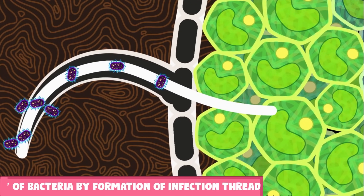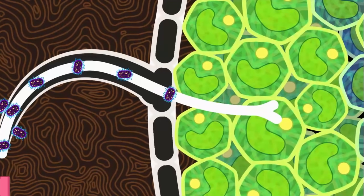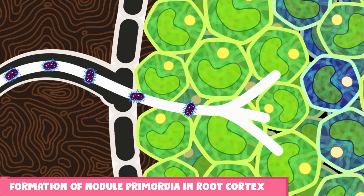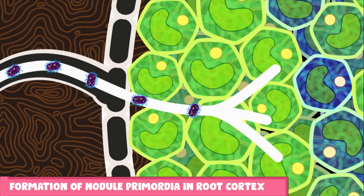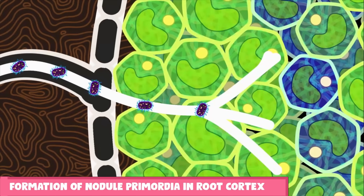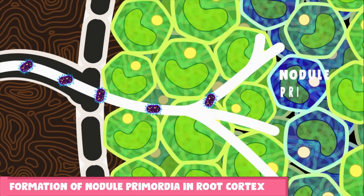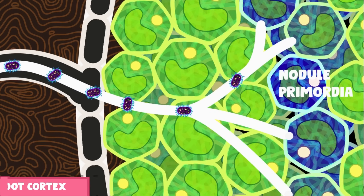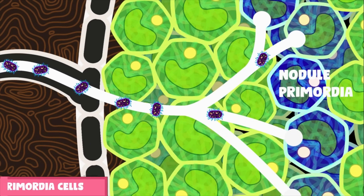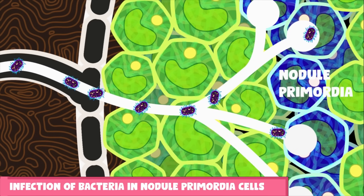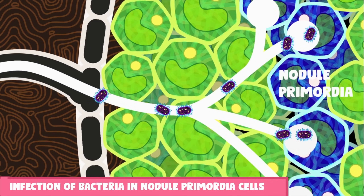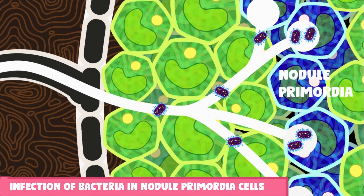Upon entry of the bacteria, simultaneously another event is taking place in the root cortex region. The cells of the root cortex, specifically the pericycle layer, become dedifferentiated. This leads to the formation of a mass of undifferentiated cells called nodule primordia. The cells of the nodule primordia are the first to receive the bacterial cells.